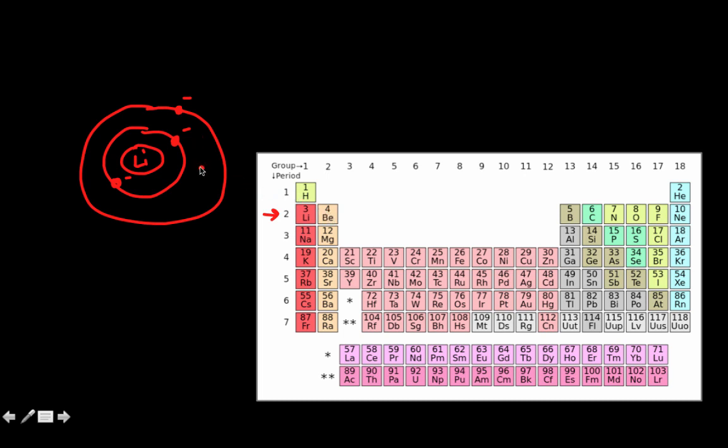If we went to beryllium, it would have two electrons, if I change that into a B and an E. If I went to boron, it would have five electrons, six, seven, eight, nine, and ten.